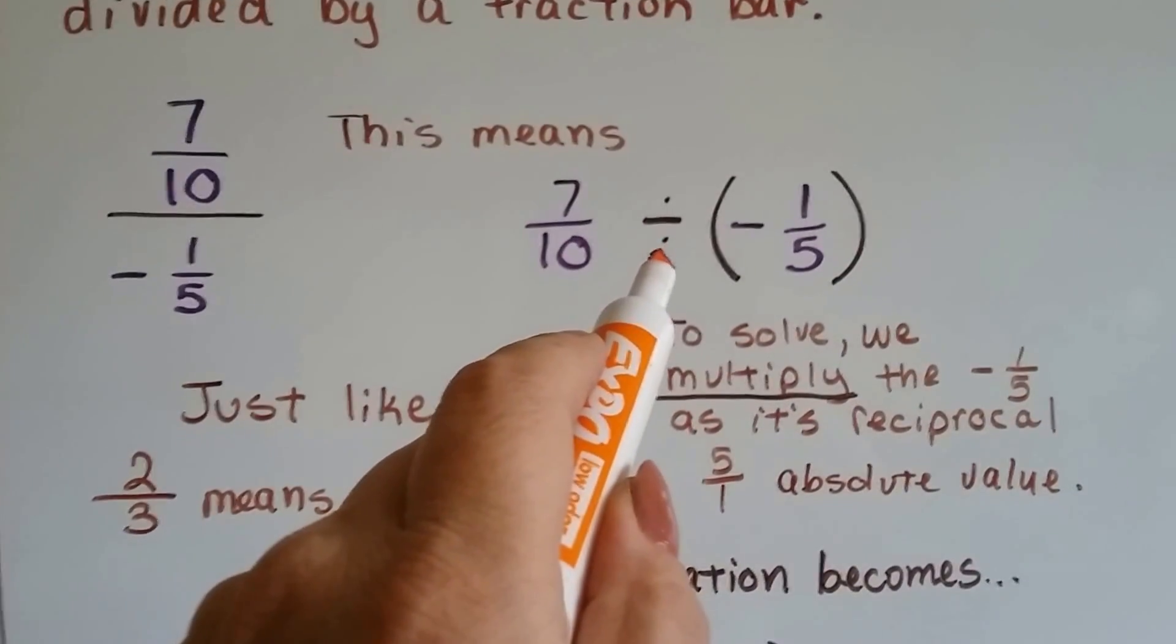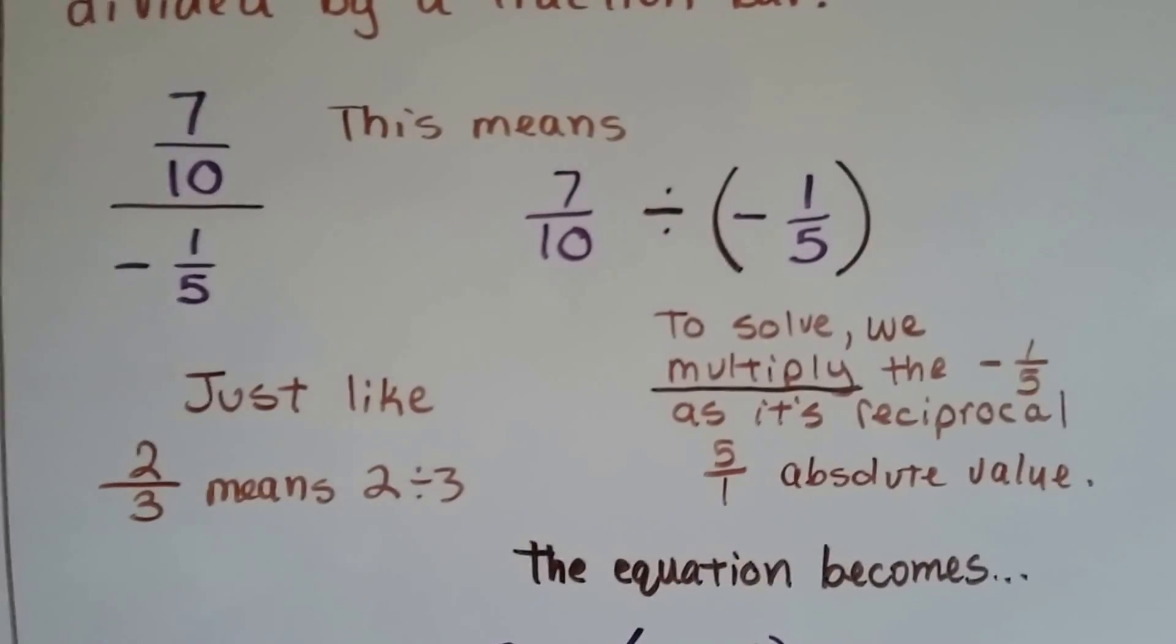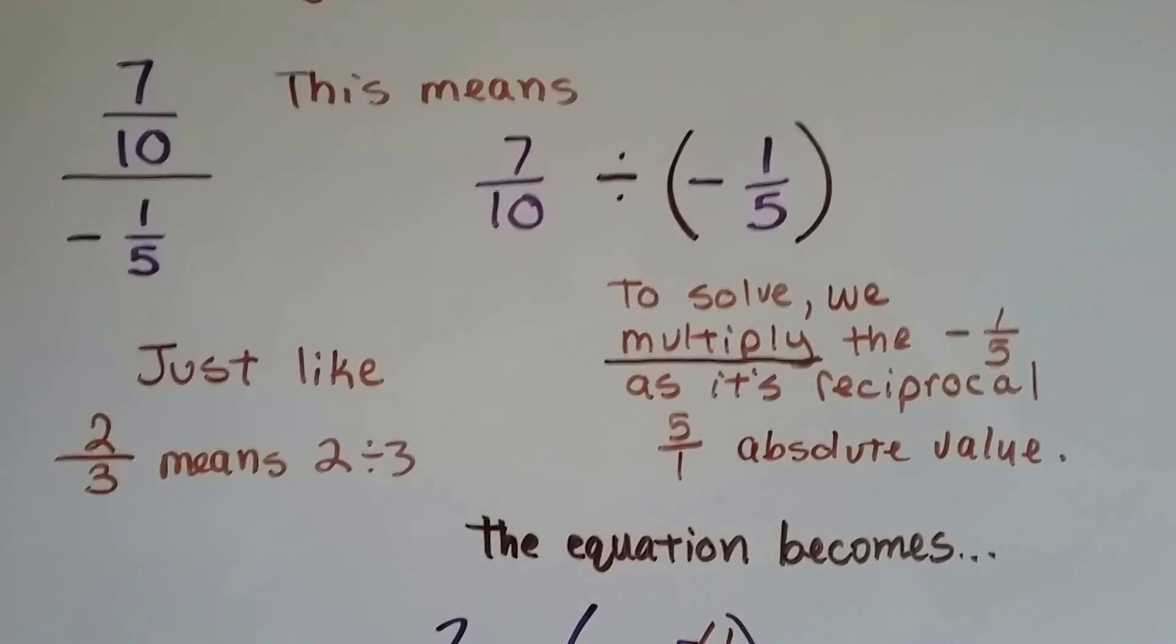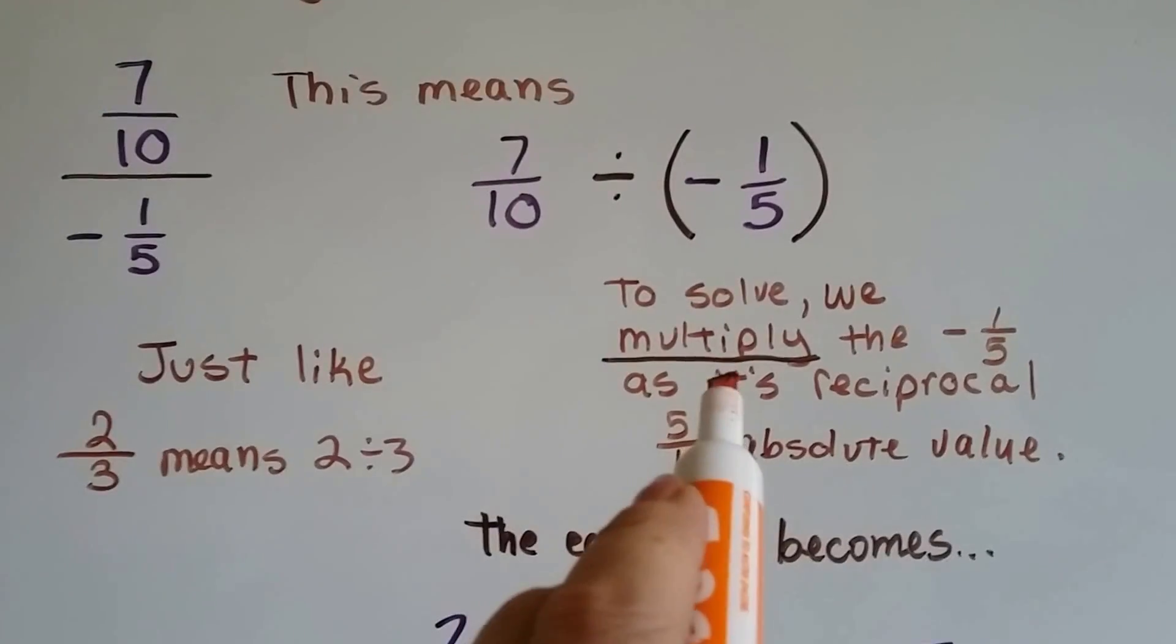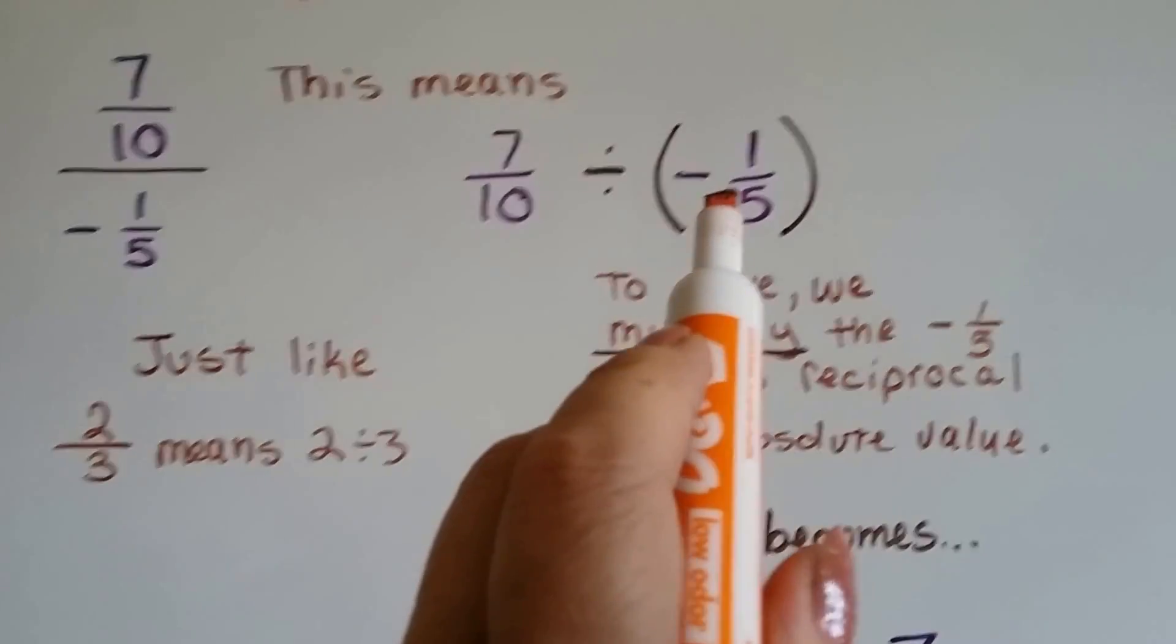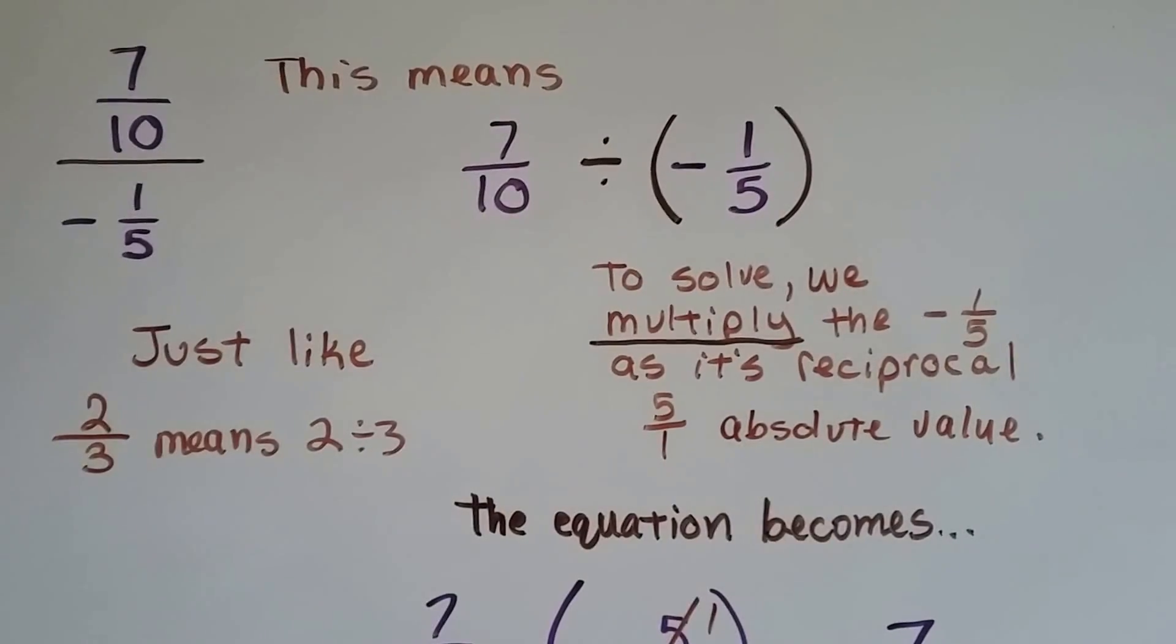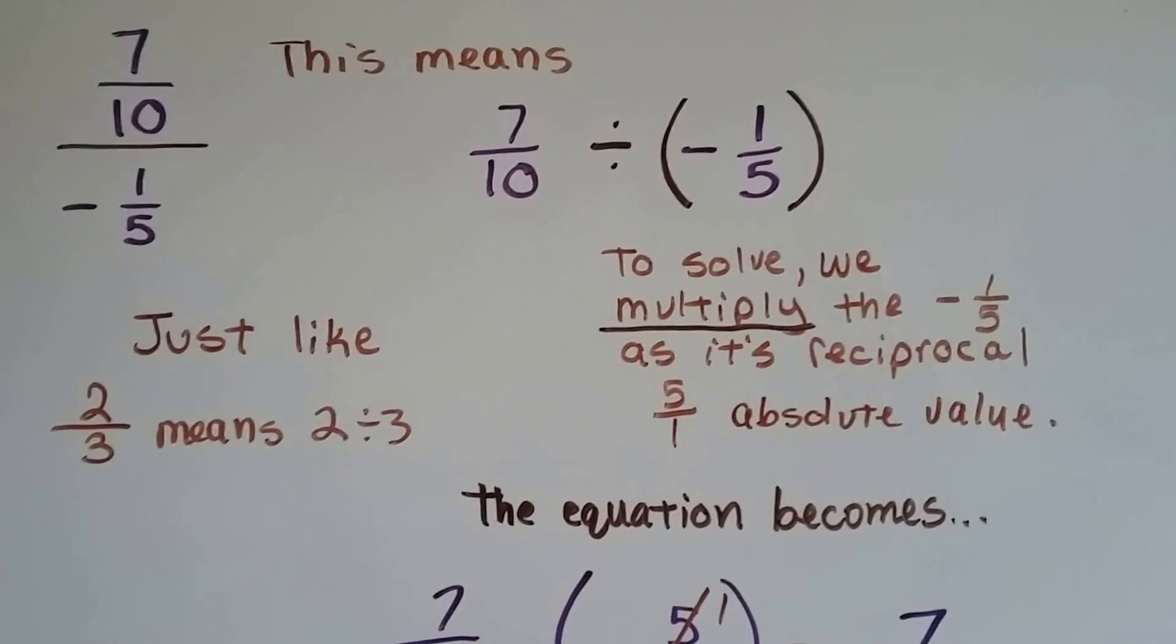Just know that this fraction bar right here just means divide. It's another way of writing this, another way of writing the division sign. So to solve this, we multiply the negative 1 fifth as its reciprocal, 5 over 1, as the absolute value.